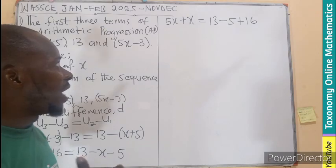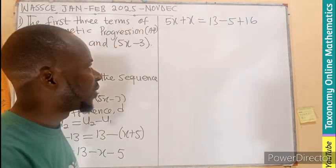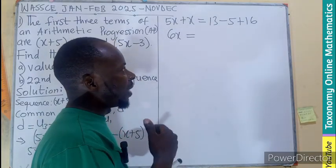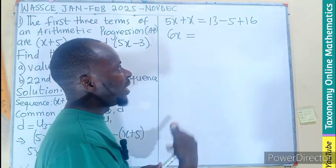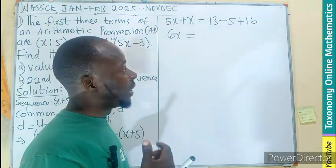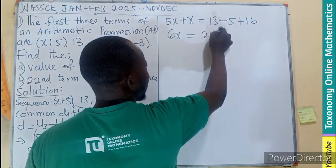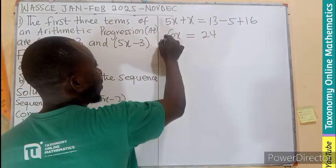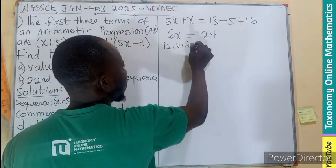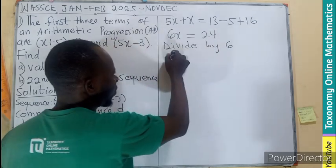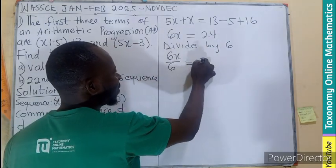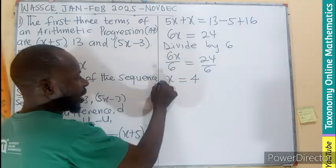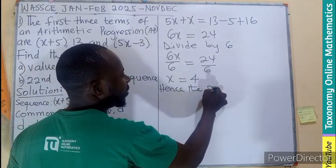So what do we do now? We can see that 5x plus 1x will give you 6x. So I should be having 6x equals to, if you have 13 minus 5, that should be giving you 8, right? And 8 plus 16 should be 24. So I should be having 24. I need the value of x. So I divide by the coefficient of x. So divide by 6. So therefore, 6x divided by 6, 24 divided by 6, x will be equal to 4.